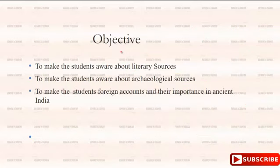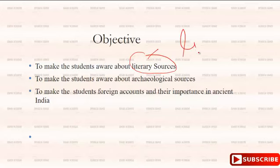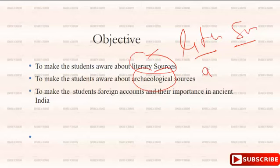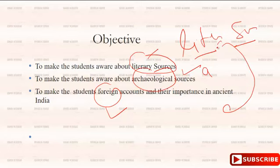Now, regarding the objectives: first, the student will be made aware about the literary sources. Second, the student will be aware about the archaeological sources. Third, the student will be aware about the foreign accounts. These three types of ancient Indian sources I will discuss today.